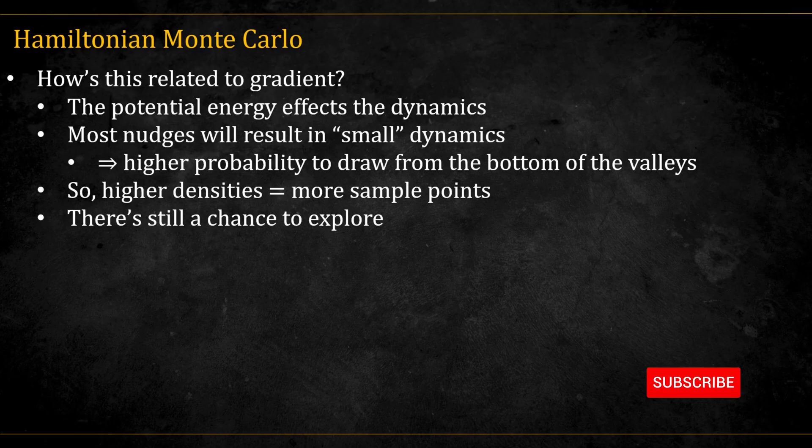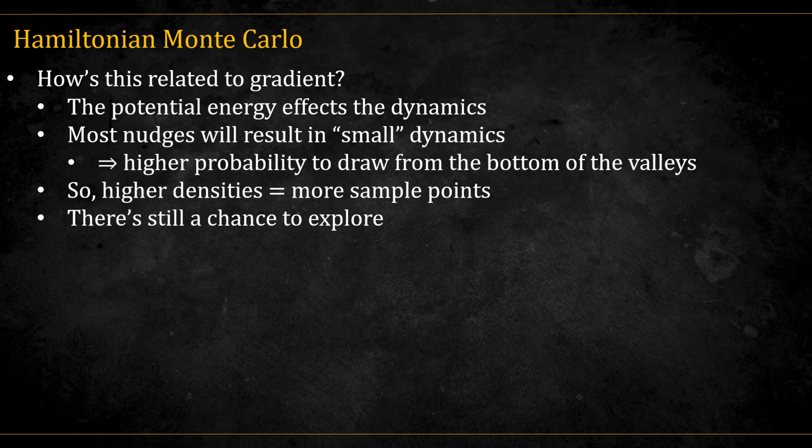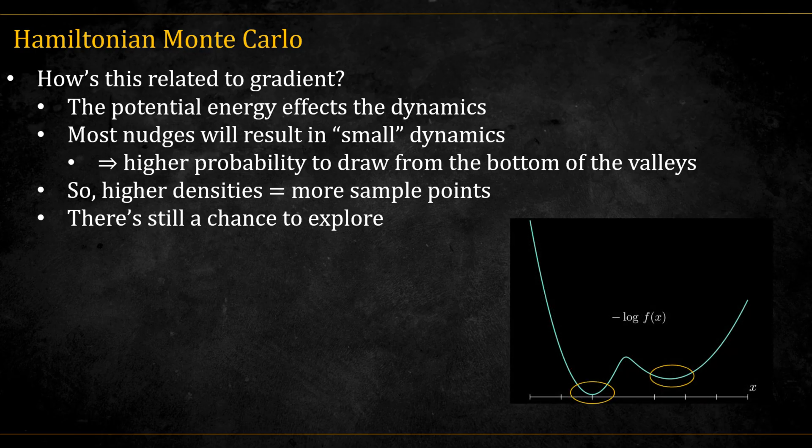Now you might be wondering, where does the gradient come into play? It comes from the potential energy when we are solving the dynamics of the system. Most of the momentum nudges we sample will lead to small movements, keeping the ball within certain valleys. That means we spend more time sampling near the bottoms of these valleys, regions of high probability. But the dynamics still give us a chance to escape and explore other areas of the distribution.